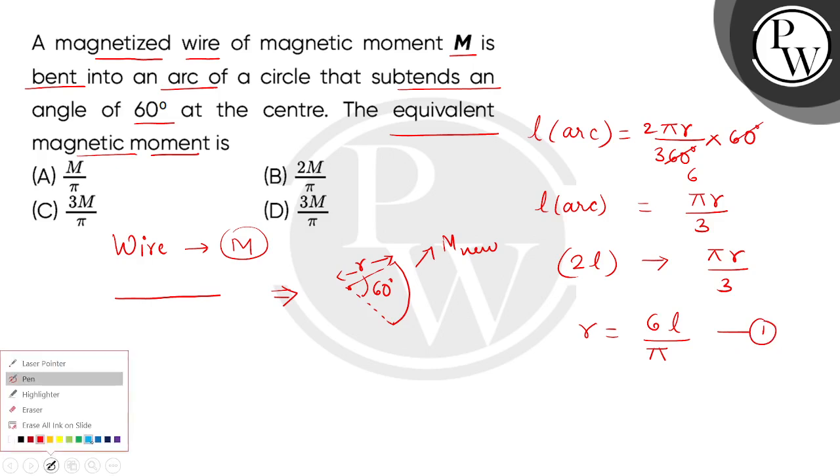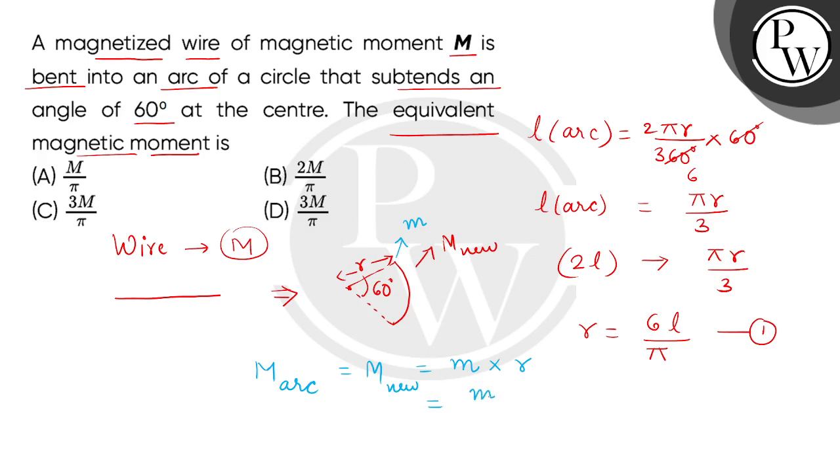Now children, let's refer to pole strength. Let's assume that each pole strength has m. What will we get for the magnetic moment of arc, which we refer to as M_new? That will be equal to pole strength multiplied by the effective separation. This is M multiplied by R. What is the value of R? 6L divided by π.